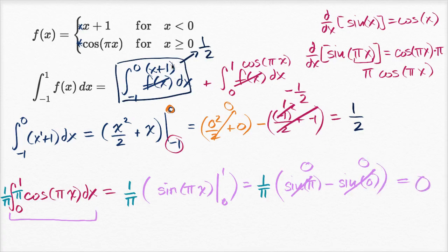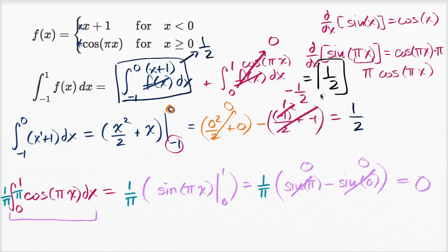This first part was one half, and this second part is equal to zero, so the whole definite integral is one half plus zero, which is equal to one half.